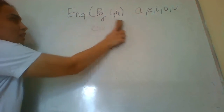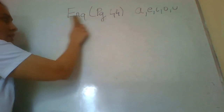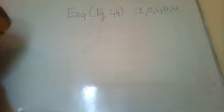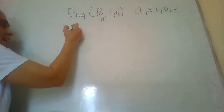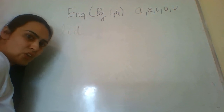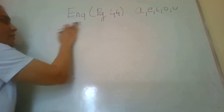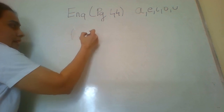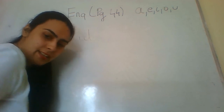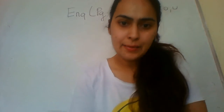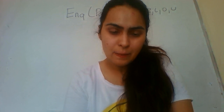Now let's talk about the third vowel — that is I. Already in the book we have the word L-I-D, 'lid'. L-I-D, lid.